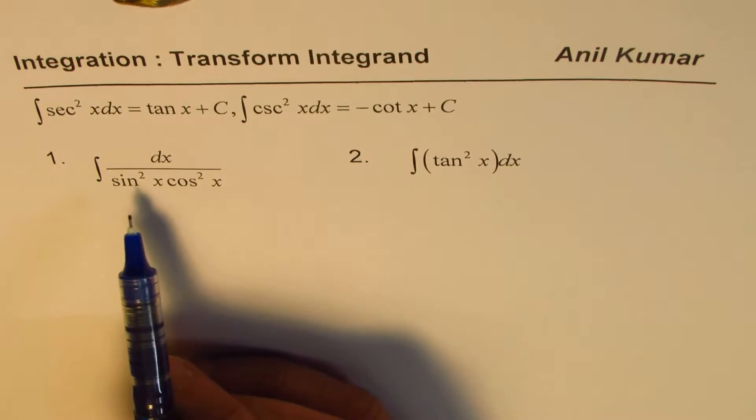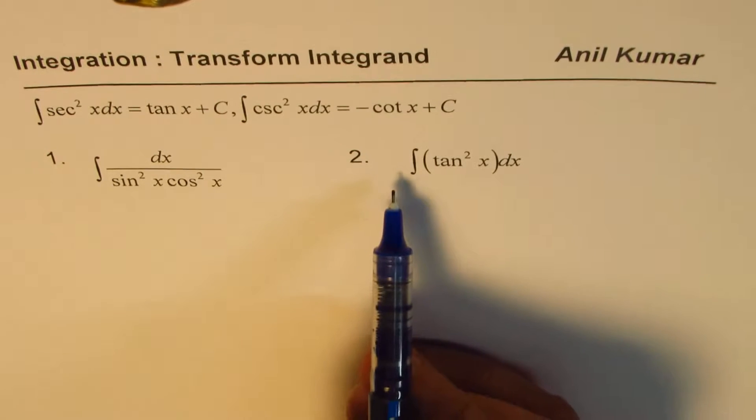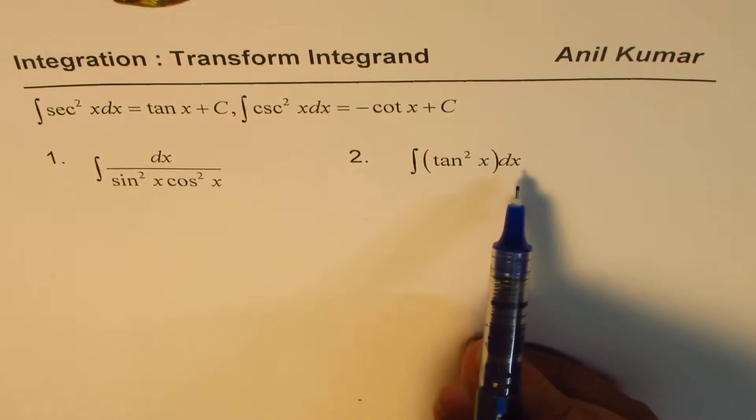The first one is integral of dx over sin square x cos square x. The other one is integral of tan square x dx.